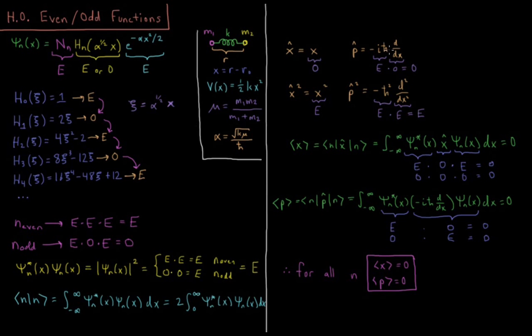Momentum is minus ih bar, first derivative with respect to x. Minus ih bar is a constant, so that's even, but we saw in the previous video that the derivative operator is odd, so even times odd gives odd. And for momentum squared, minus ih bar squared, second derivative with respect to x. So that's an even function times an odd function squared is an even function. So even times even gives even.